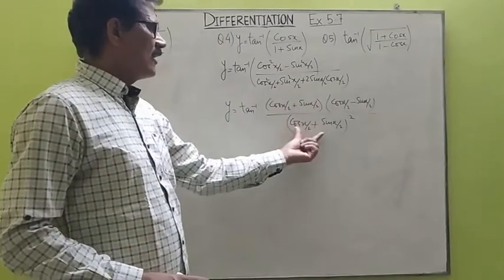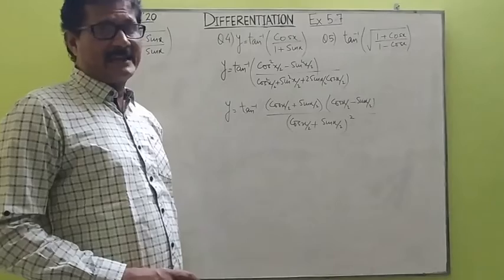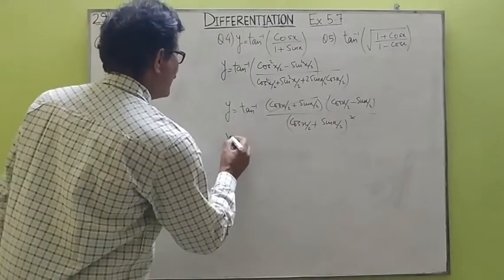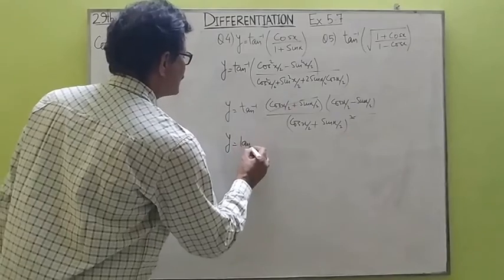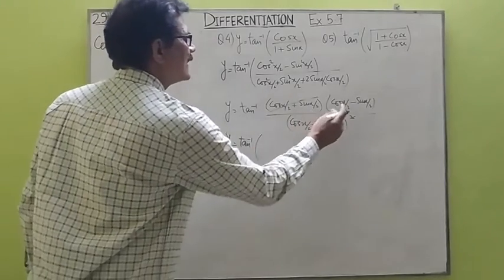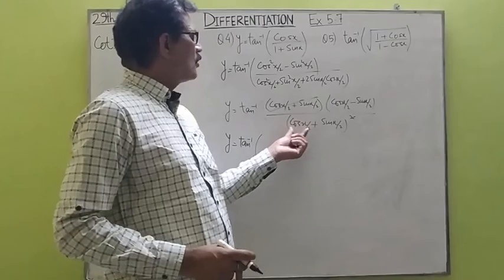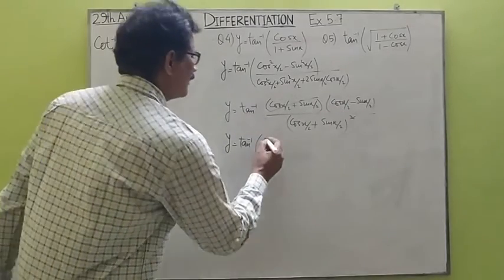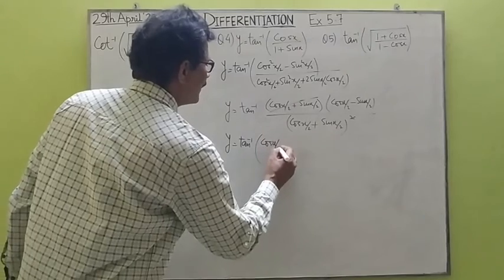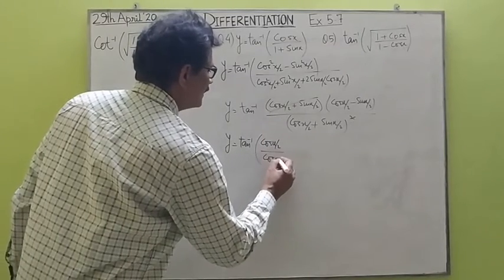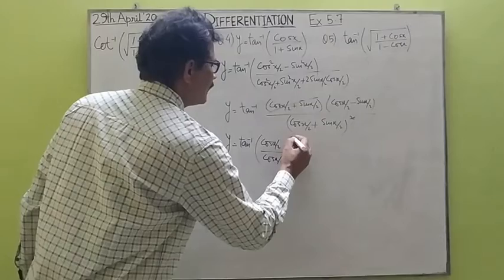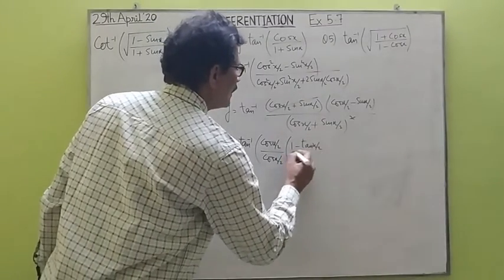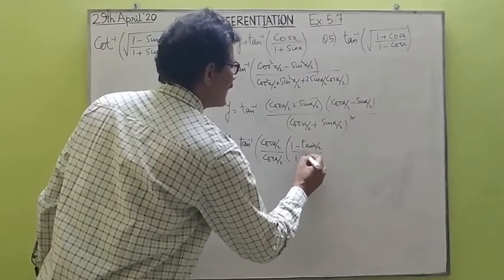When we simplify, the denominator becomes the whole square of (cos(x/2) plus sin(x/2)), and this cancels out. So we get y equals tan inverse of (cos(x/2) minus sin(x/2)) upon (cos(x/2) plus sin(x/2)). Taking cos(x/2) common in numerator and denominator, this cancels and we get 1 minus tan(x/2) upon 1 plus tan(x/2).